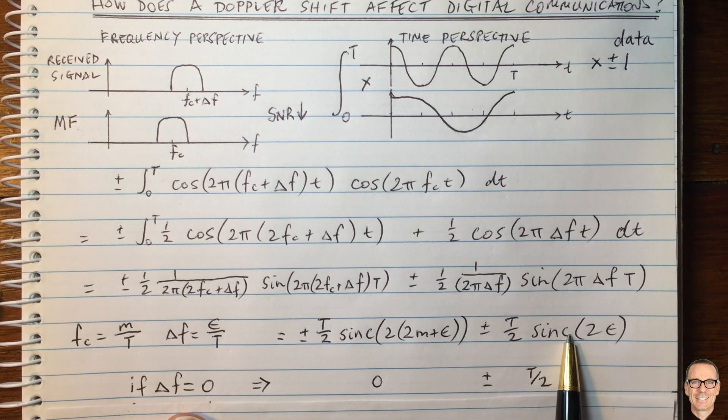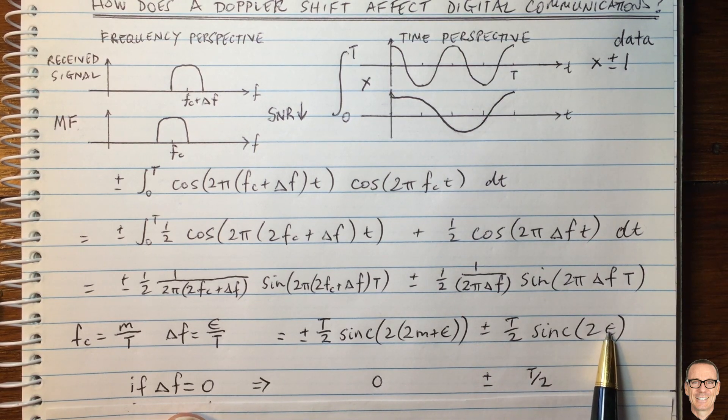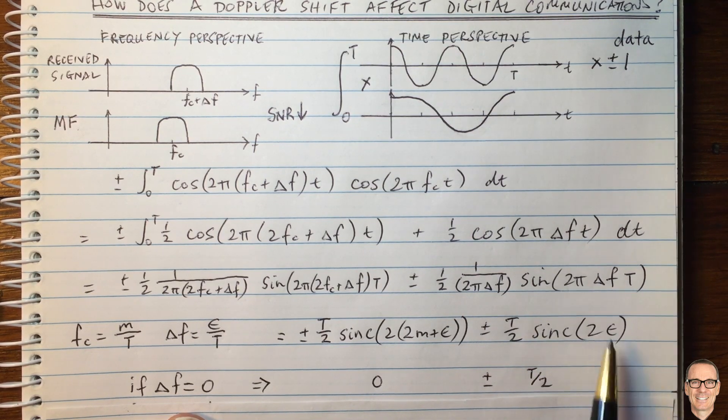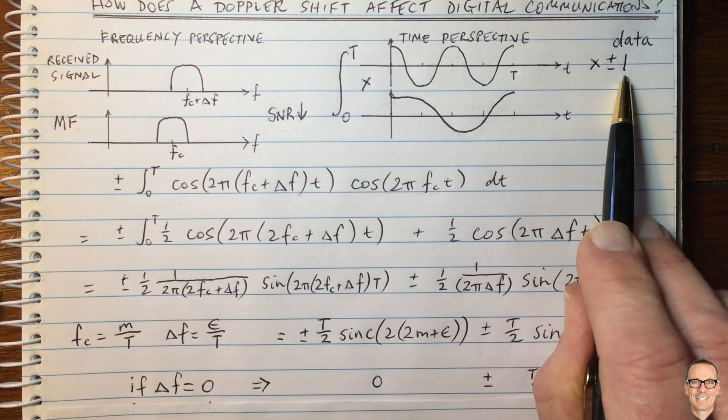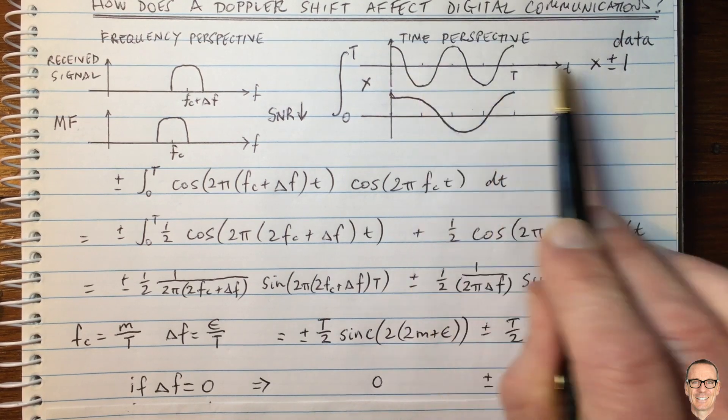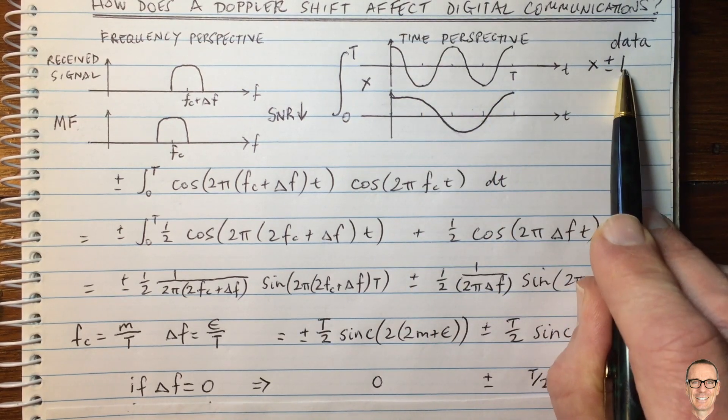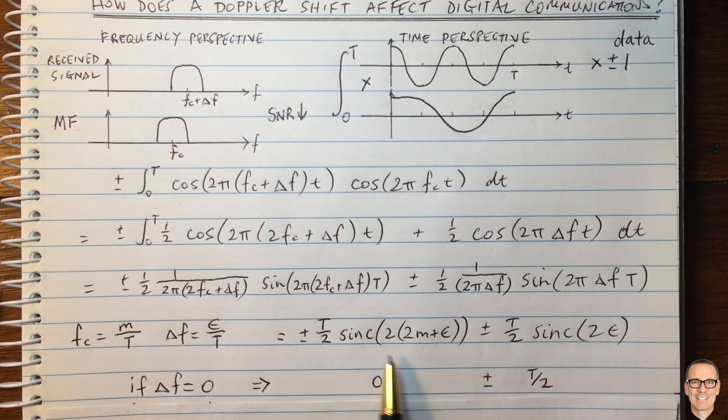So this second term here comes with sinc of zero, which equals one. So we've got capital T divided by two. The plus and minus, don't forget, is coming because of the data that was sent. We don't know if it was a plus one or a minus one.